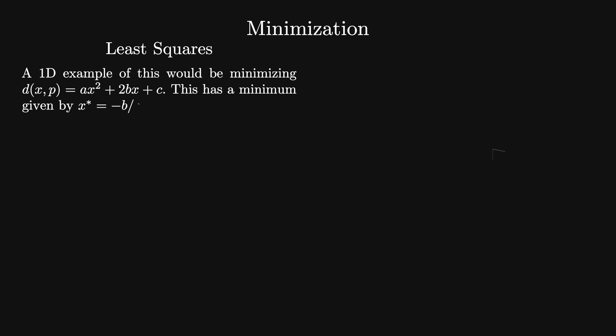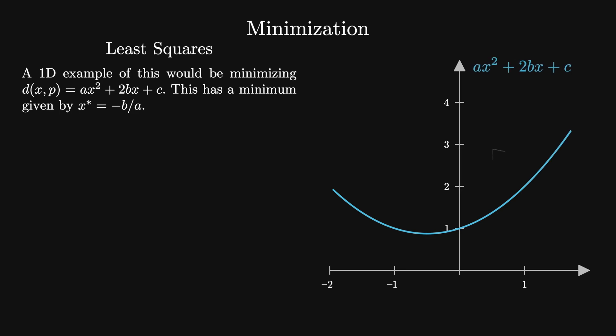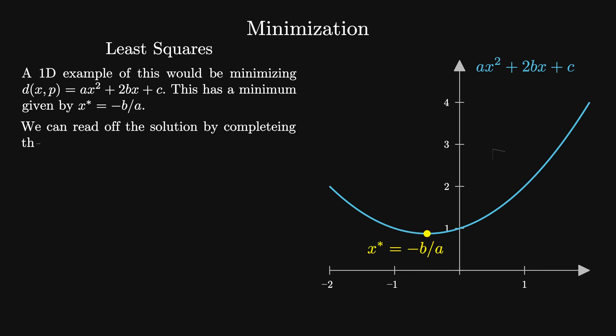Let's employ a technique called least squares. We'll start by illustrating this for a simple 1D example. In this case, the distance between a point and a line is given by d equals ax squared plus 2bx plus c. The minimum for this is x equals minus b over a. We could solve this instead by completing the square, so that d equals a times (x plus b/a) squared minus b squared over a squared plus c.